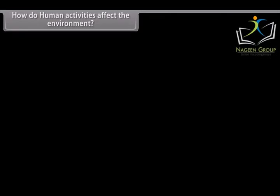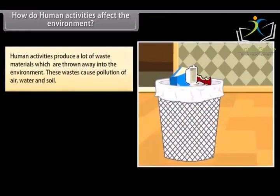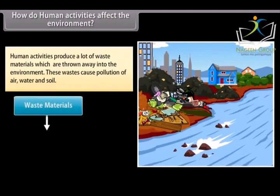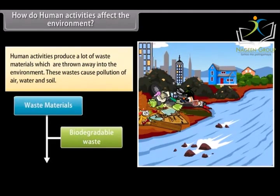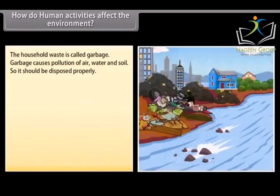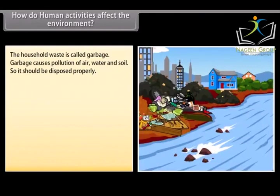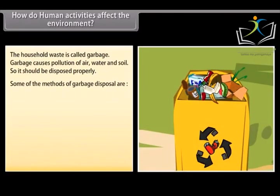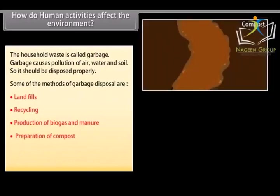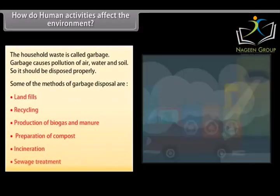Human activities produce a lot of waste materials which are thrown into the environment, causing pollution of air, water and soil. The waste materials produced are of two main types: biodegradable waste and non-biodegradable waste. The household waste is called garbage. Garbage should be disposed properly — some methods of garbage disposal include landfills, recycling, production of biogas and manure, preparation of compost, incineration, and sewage treatment.